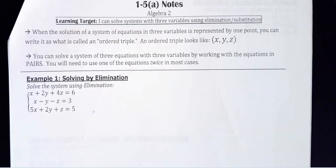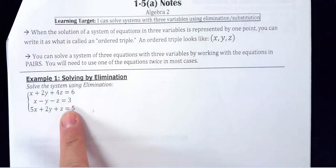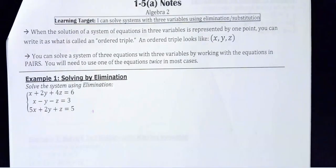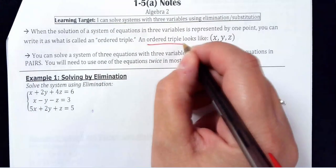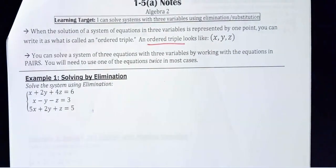What we call the solution to a three-variable system is called an ordered triple, and you write it like a normal point: x comma y, but then you add the third letter z. You can't graph these in three dimensions — we're not going to do that in this class; you'll do that later on next year.